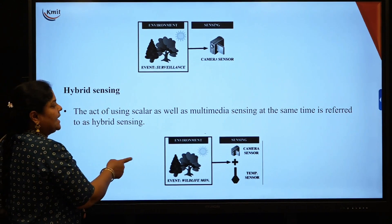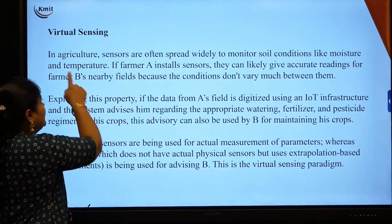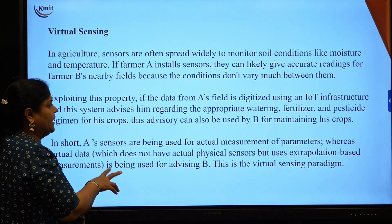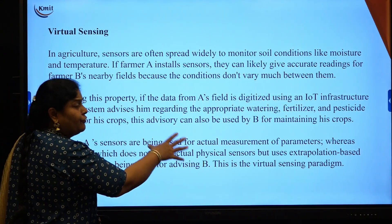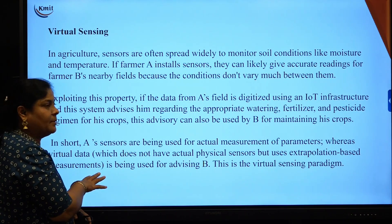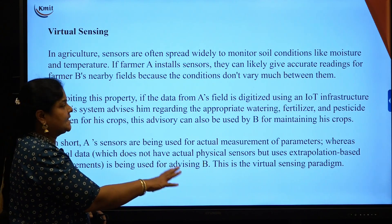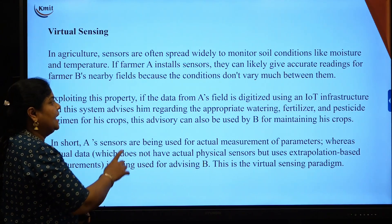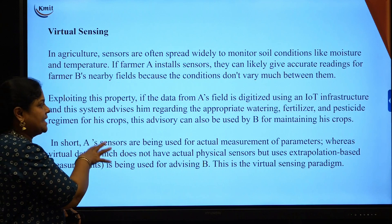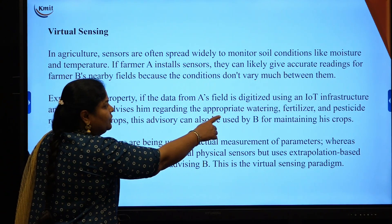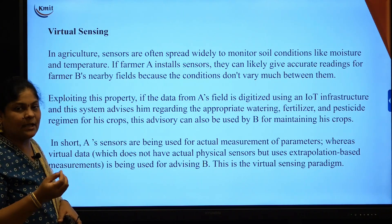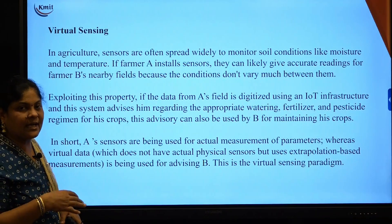When both scalar and vector sensors are placed in one environment, we call it hybrid sensing. The last type is virtual sensing. Taking the example of agriculture: we have Farm A and Farm B. Farm A has all the sensors physically placed, but Farm B has no sensors. Since both fields are nearby with little variation in conditions, an IoT infrastructure collects values from Farm A.